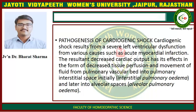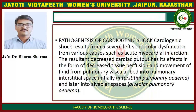Pathogenesis of cardiogenic shock. Cardiogenic shock results from severe left ventricular dysfunction from various causes such as acute myocardial infarction. The resultant decreased cardiac output causes decreased tissue perfusion and movement of fluid from the pulmonary vascular bed into the pulmonary interstitial space initially — interstitial pulmonary edema — and later into the alveolar space, causing alveolar pulmonary edema.